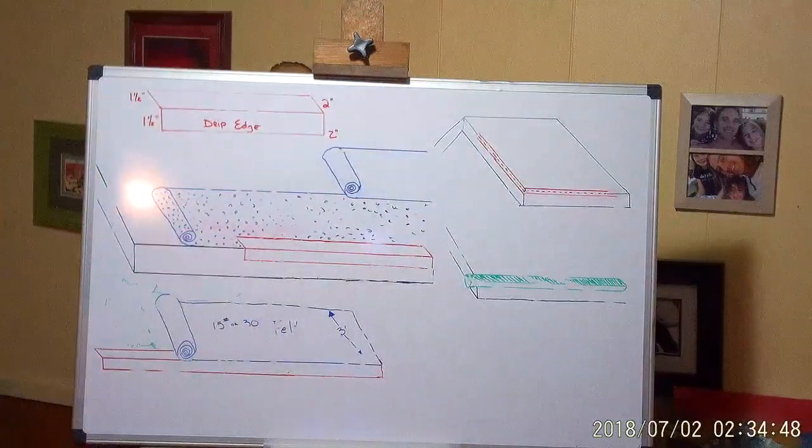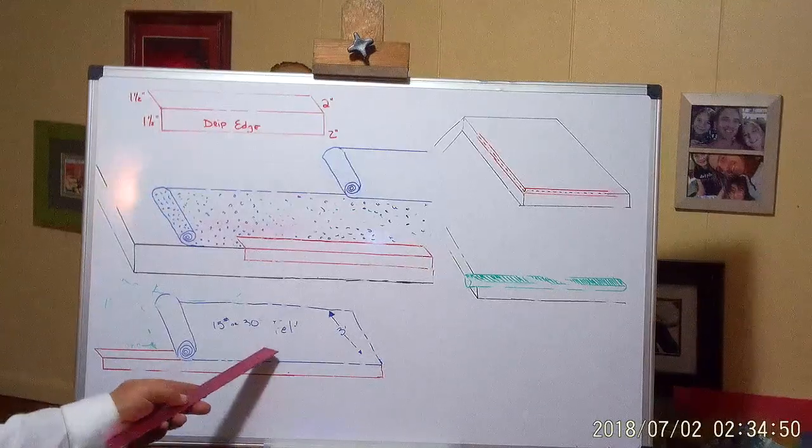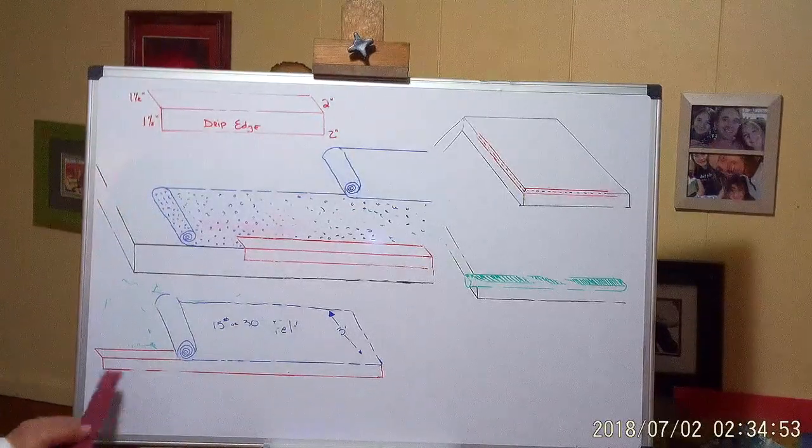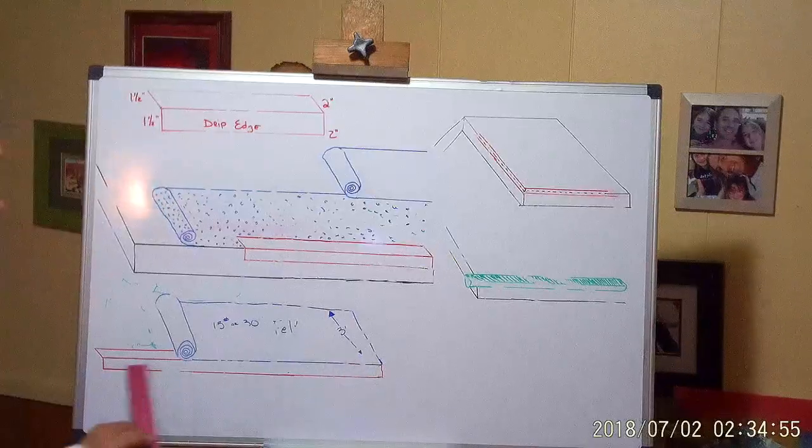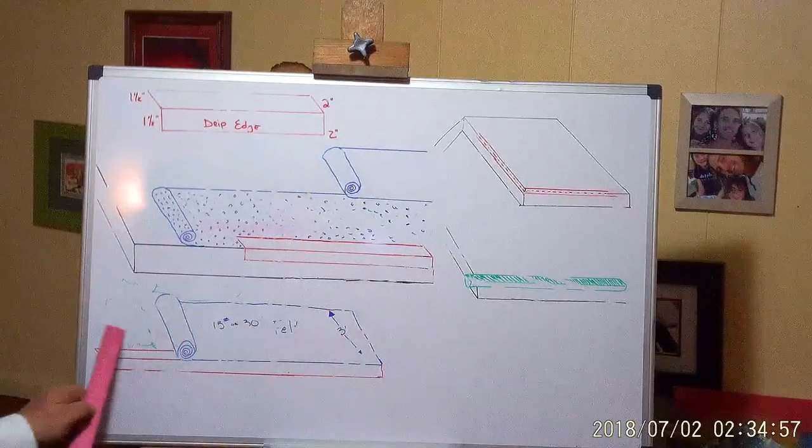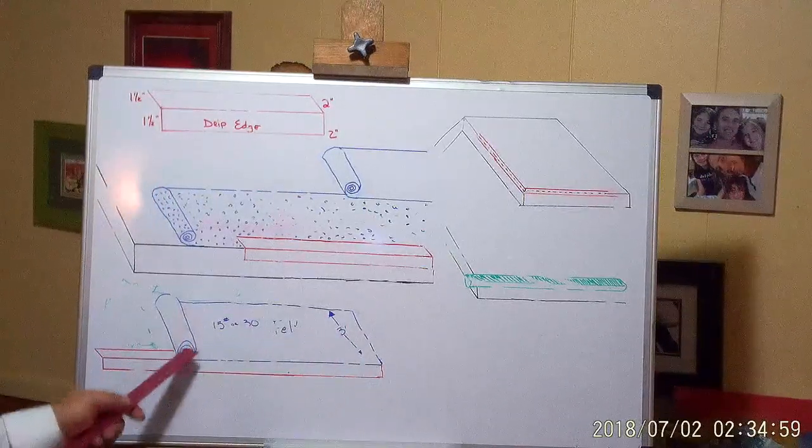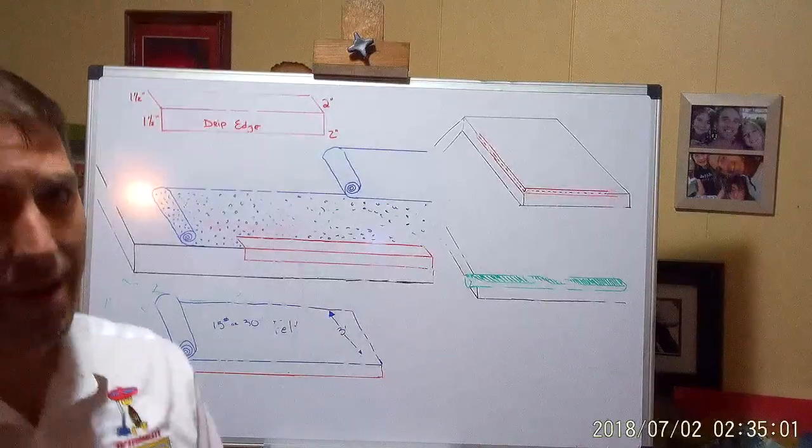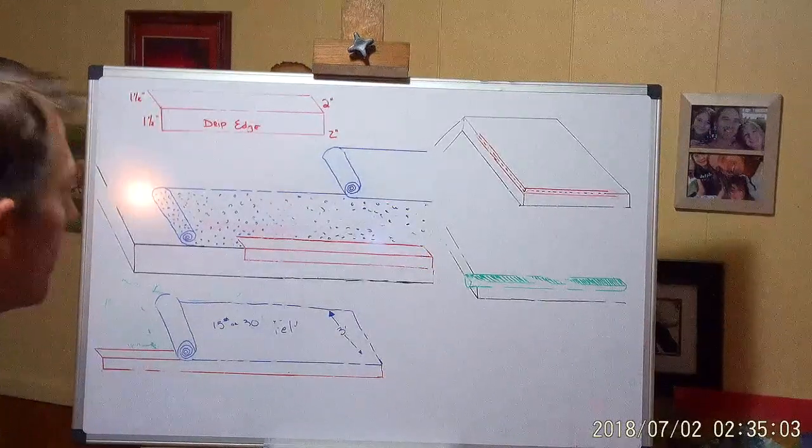Right here I have two examples. The lower one is the proper way of doing it. Again, drip edge first, felt over top of the drip edge. You can plastic cap or hammer tack that felt on afterwards.